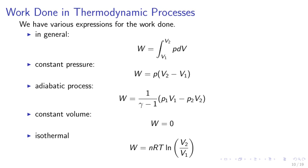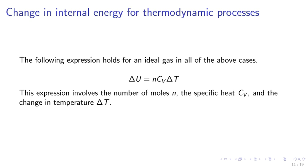Work done in thermodynamic processes. We have various expressions for the work done. In general, W equals integral V1 to V2 of PDV. Constant pressure: W equals P(V2 minus V1). Adiabatic process: W equals 1 over gamma minus 1 times (P1V1 minus P2V2). Constant volume: W equals 0. Isothermal: W equals NRT LN V2 over V1. The following expression holds for an ideal gas in all of the above cases: Delta U equals NCV delta T. This expression involves the number of moles N, the specific heat CV, and the change in temperature delta T.